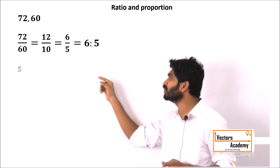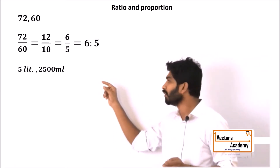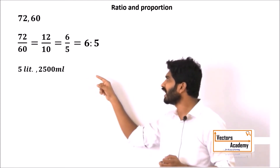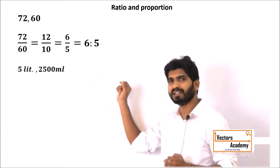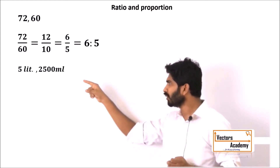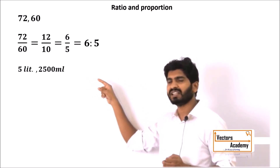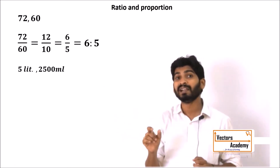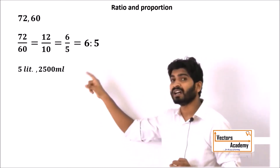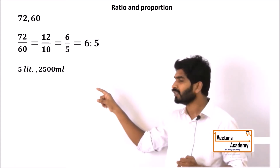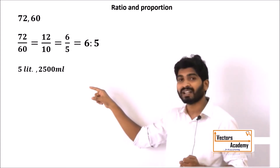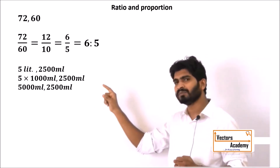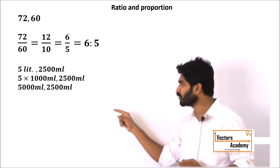Now suppose there are two numbers whose units are not the same. For example, 5 liters and 2500 milliliters. One term is in liters and the other is in milliliters. Since milliliters is the smaller unit, we convert the larger unit into the smaller unit. So 5 liters can be written as 5000 milliliters, and now both terms are in milliliters.